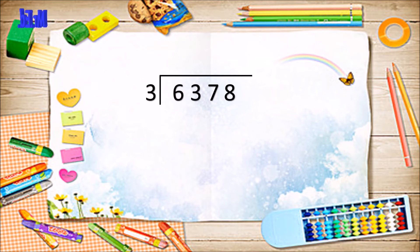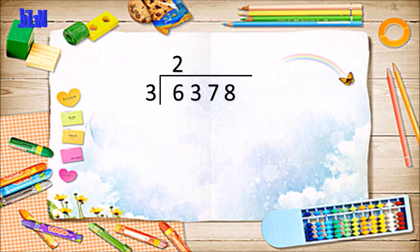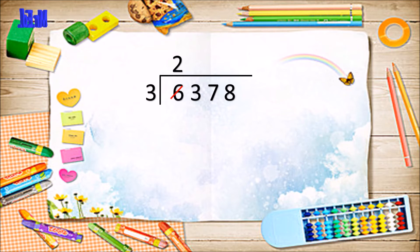Using my number facts, I know that three goes into six two times, so three goes into six thousand two thousand times. I place the two thousand in the quotient area and cross out the six. Moving along, I find how many times three goes into three hundred — three goes into three once, so three goes into three hundred one hundred times. I cross out the three and move along.